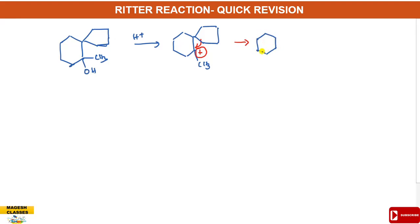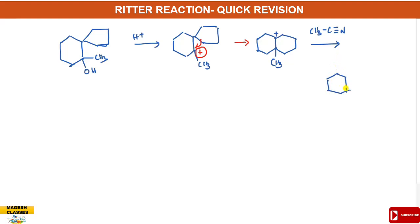Ring expansion and ring contraction are explained in terms of carbocation stability. Due to the 5-membered ring, it will become a 6-membered ring, and the carbocation is present at that position. Then the nitrile is added, and the amide part is introduced at this area. So before it is attacked by the nitrile, the carbocation is involved in rearrangement.